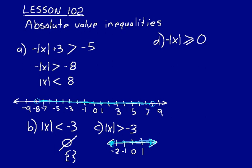Let's do one more. Minus the absolute value of x is greater than or equal to 0. Well, we need to get rid of that minus sign. So we multiply both sides by negative 1. And that reverses the inequality. So we have absolute value of x less than or equal to 0.